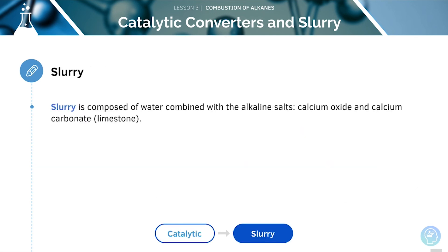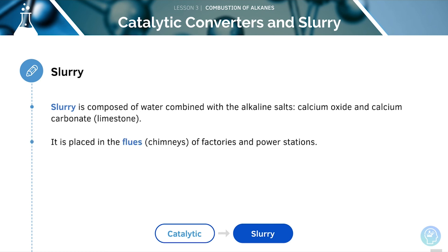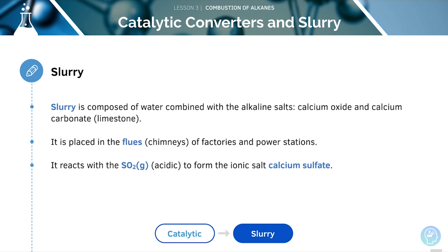Slurry is made up of water combined with the alkaline salts calcium oxide and calcium carbonate, also known as limestone. It's placed in flues or chimneys of factories and power stations. It reacts with the sulfur dioxide gas, which is acidic, to form the ionic salt calcium sulfate.